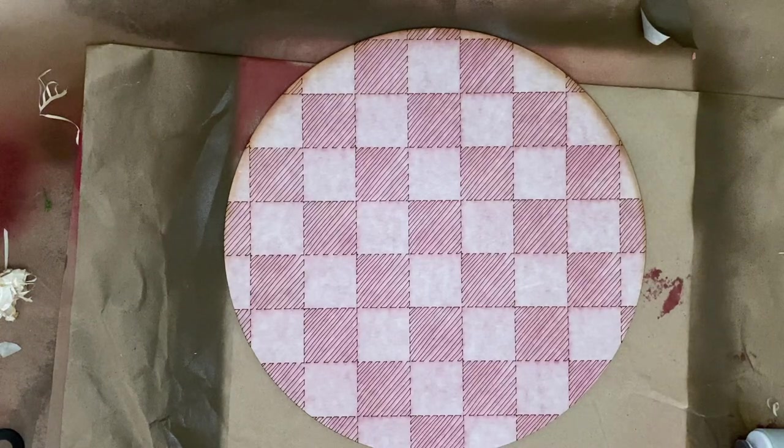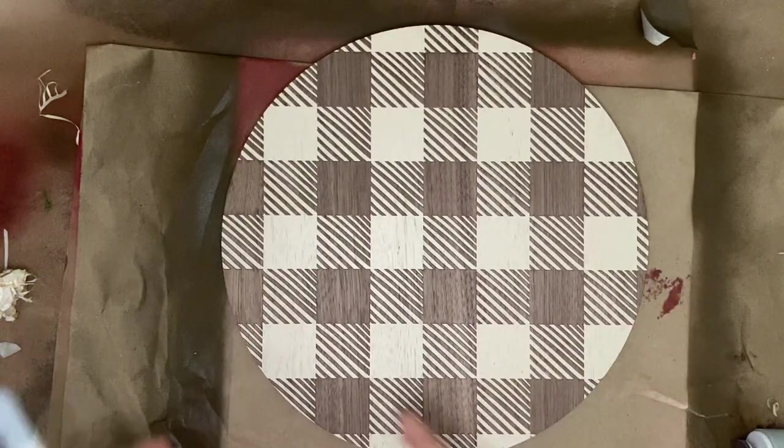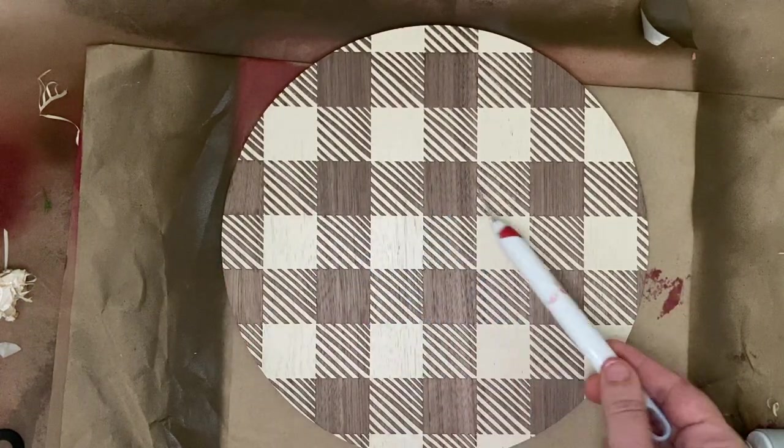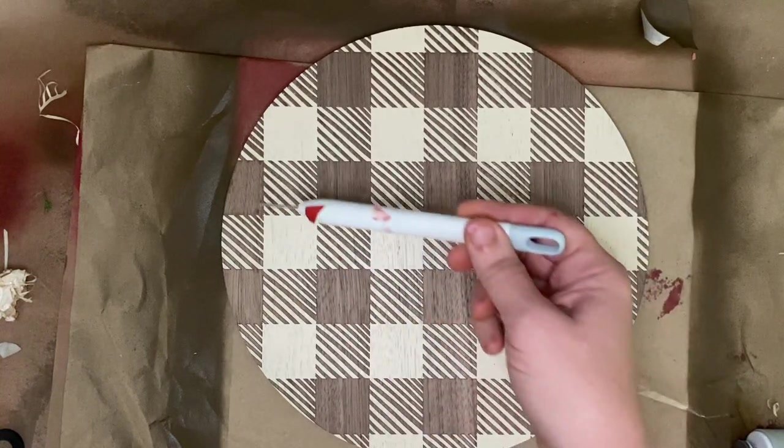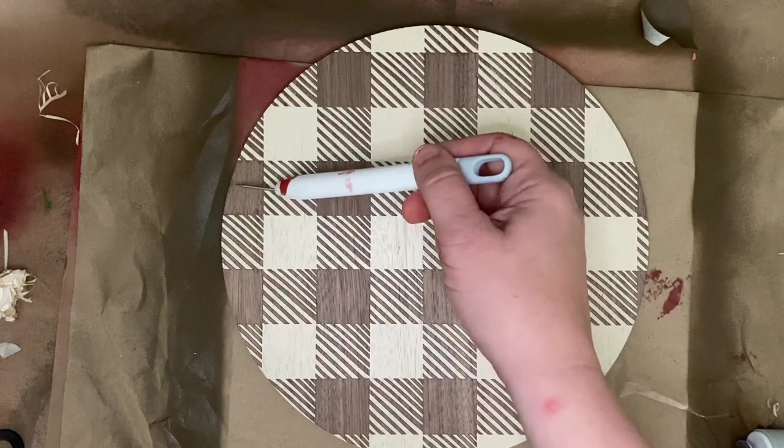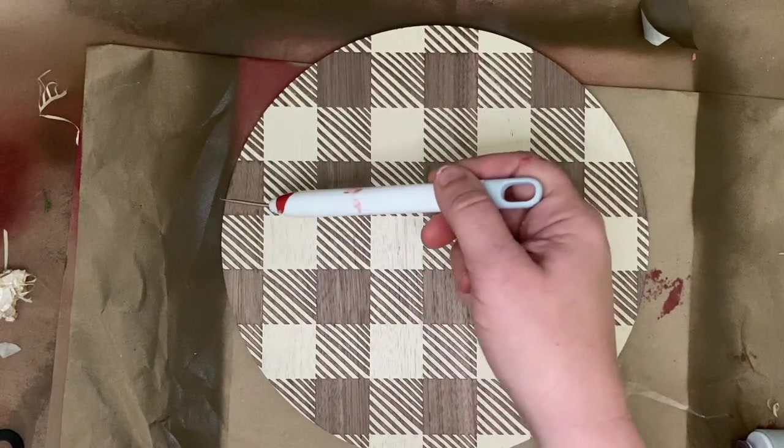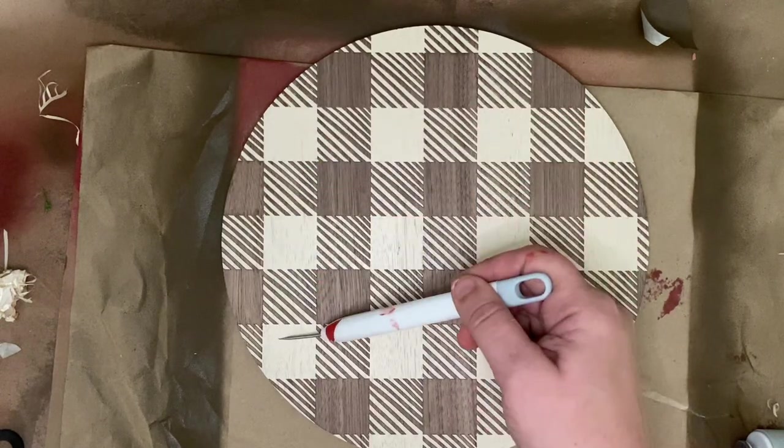So the way buffalo plaid works, if we look at this, you are going to have the stripes are going to be every other square no matter what. But you are going to have either your solid squares are either going to be uncovered or they are still going to be covered. So these would be the ones that we would uncover. These are the ones that are still covered.